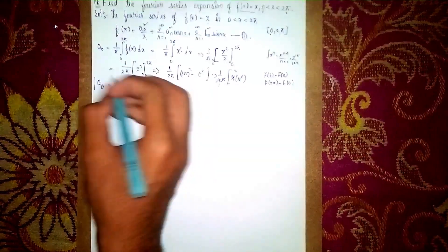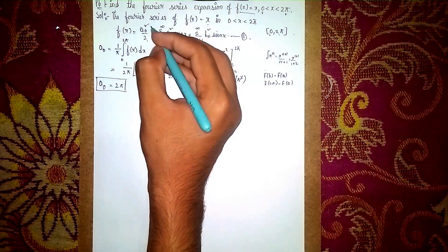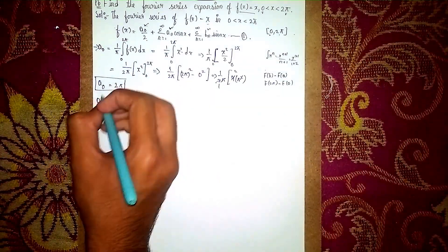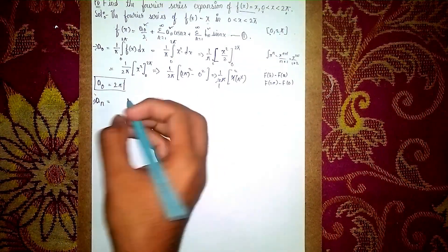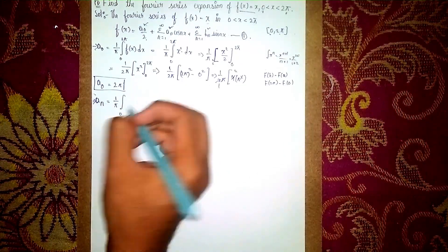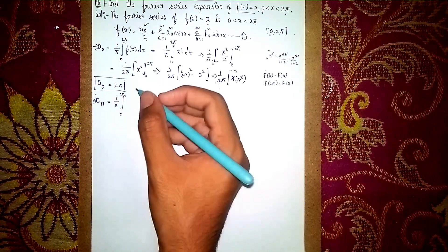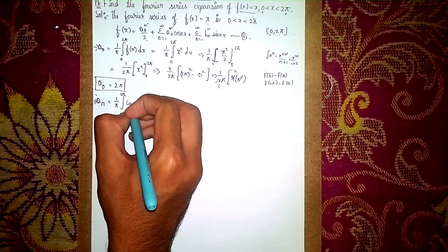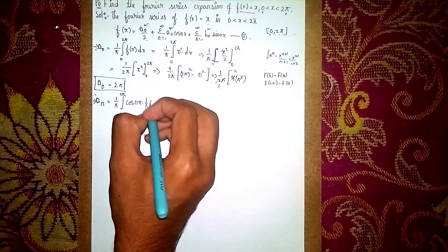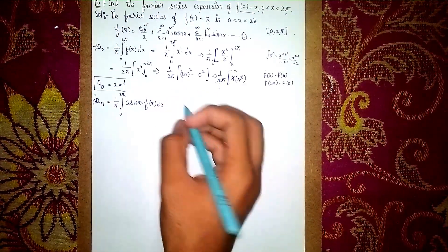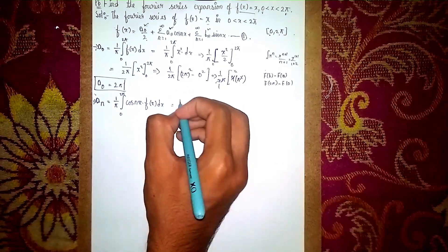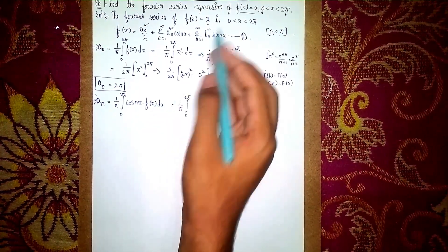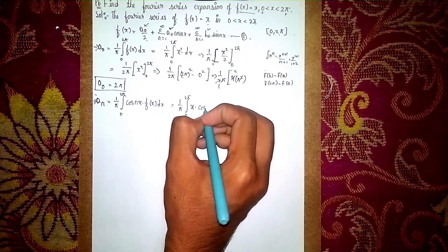We've found a₀ = 2π — highlight and box this. Now for the aₙ formula: aₙ = (1/π) × integral from 0 to 2π of f(x) × cos(nx) dx. Substituting f(x) = x, it becomes (1/π) × integral from 0 to 2π of x × cos(nx) dx.